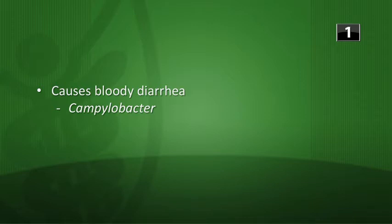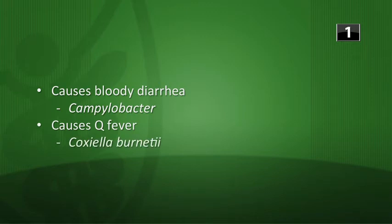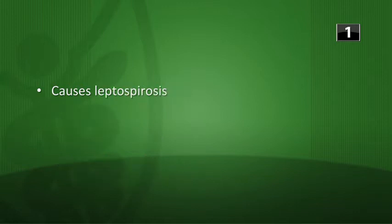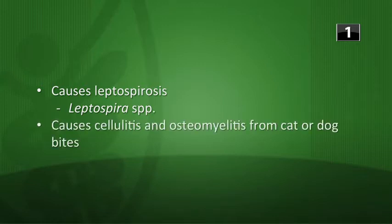Causes Q fever - that's going to be Coxiella burnetii, transmitted by spores from tick feces and cattle placenta. Causes tularemia - think about rabbits, rabbit bites - that's Francisella tularensis. Leptospirosis - think of Leptospira species, transmitted by animal urine. Causes cellulitis and osteomyelitis from cat or dog bites - think of Pasteurella multocida.